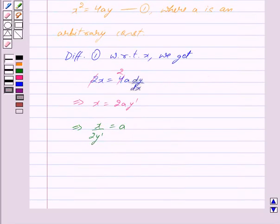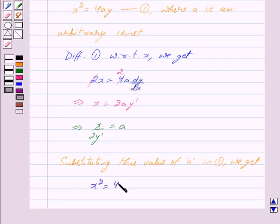Now, substituting this value of a in equation 1, we get x² = 4(x/2y')y.